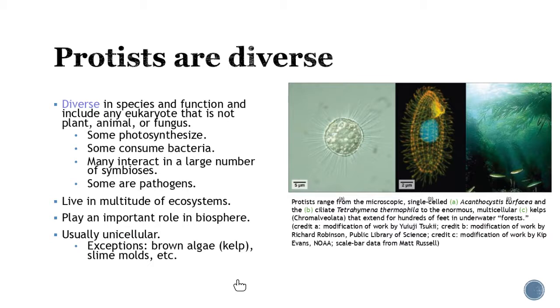When it comes to protists, what you should get from this lecture is they're very diverse. There's a lot out there when it comes to the different species and function. You can spend probably a whole semester on all the diversity that is just a protist. Pretty much the reason you say diversity, it's any eukaryote that is not a plant, an animal, or a fungus. Some of them are going to go through photosynthesis. Some are actually going to consume bacteria. A lot of them are going to have that symbiotic relationship with something. Some of them are going to be severe pathogens. They live in so many different ecosystems.